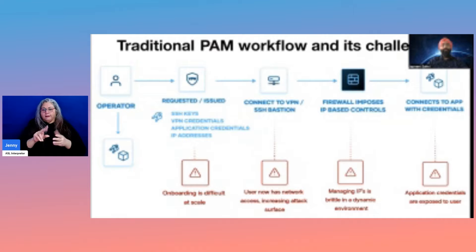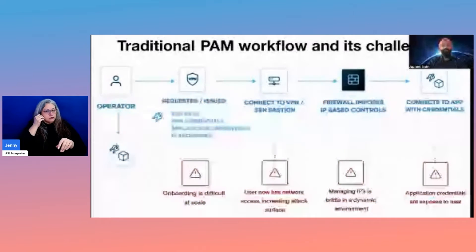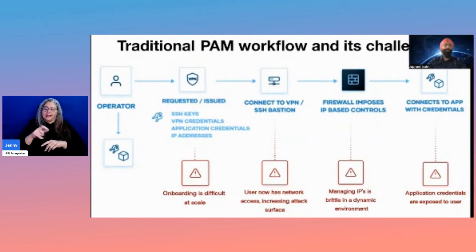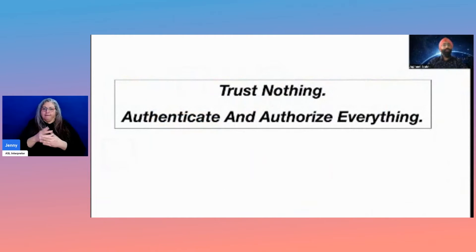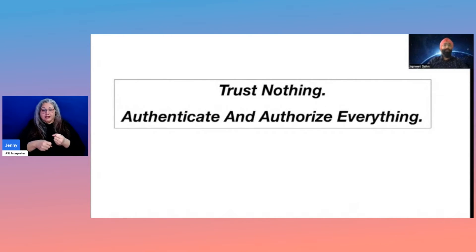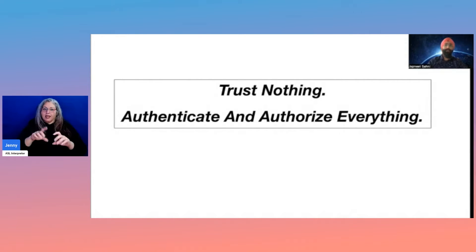Considering this workflow, you'll notice there's a bunch of information the user needed: first, VPN or SSH credentials; second, the IP or hostname to connect to; and finally, the database credentials to get all the way through. There are a number of challenges in this workflow. If we have to move towards a zero trust security philosophy — which basically means trust nothing, authenticate and authorize everything — we definitely need to do something differently.